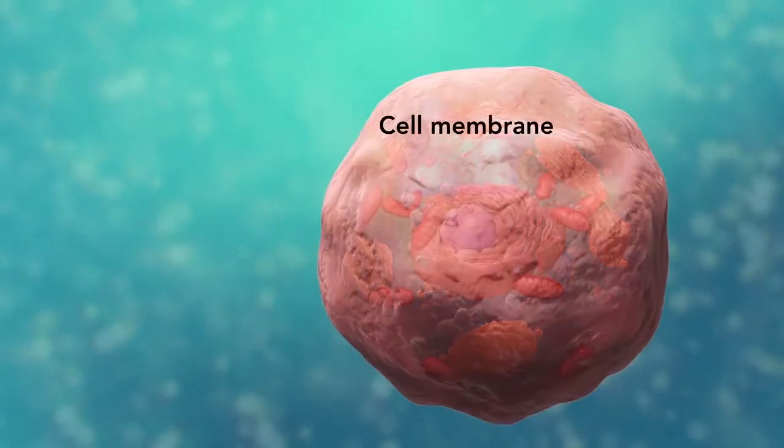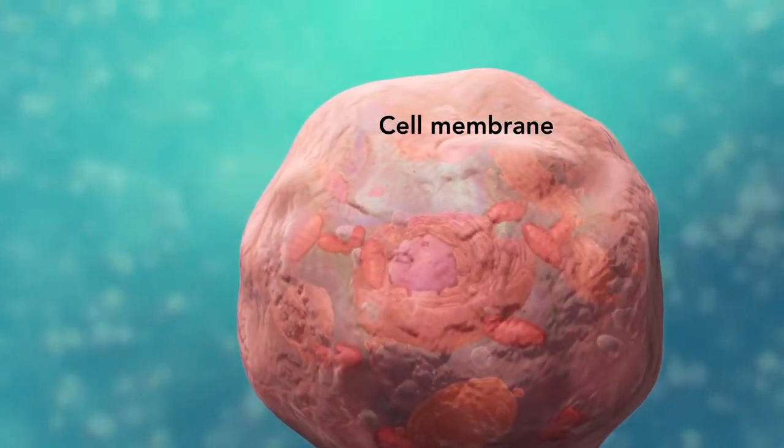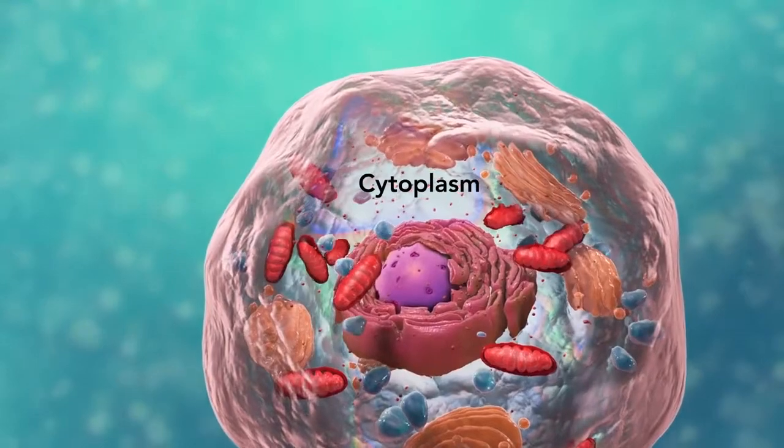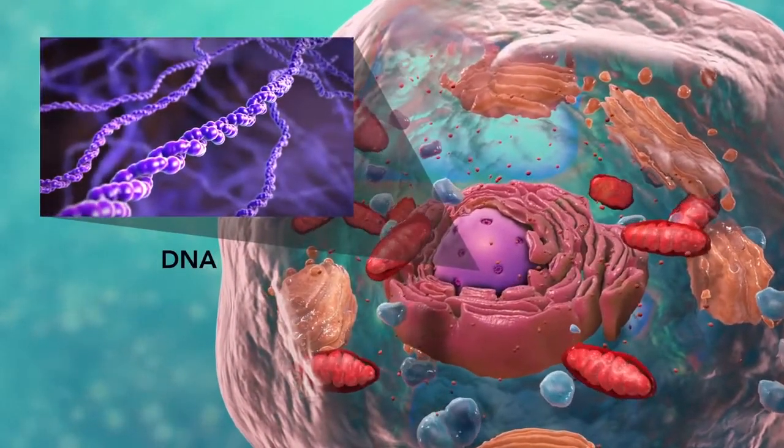All cells have a cell membrane which separates the inside of the cell from its environment, cytoplasm which is a jelly-like fluid, and DNA which is the cell's genetic material.